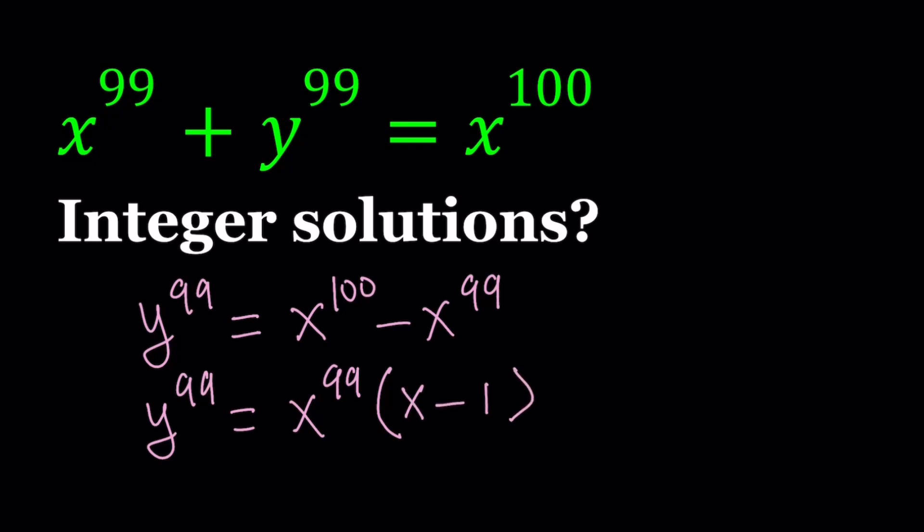So inside the parentheses, we have x minus 1. When you go ahead and distribute, use the distributive property, you'll get the original expression. So that's how we can check your work with factoring because factoring can sometimes be tricky. All right, great.